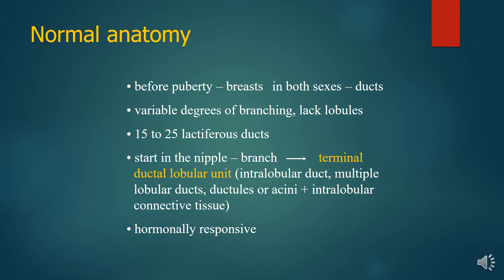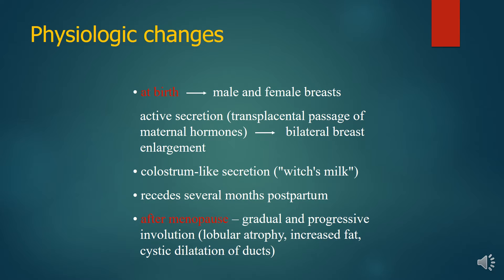The structure includes the interlobular duct, multiple lobular ducts, and involves hormonal responses. At birth, male and female breasts have active secretion due to transplacental passage of hormones, and there is bilateral breast enlargement with colostrum-like secretion, which is called witch's milk, and this recedes after several months postpartum.